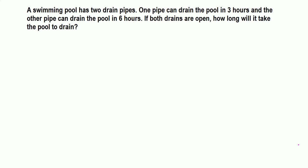A swimming pool has two drain pipes. One pipe can drain the pool in three hours and the other pipe can drain the pool in six hours. If both drains are open, how long will it take the pool to drain?